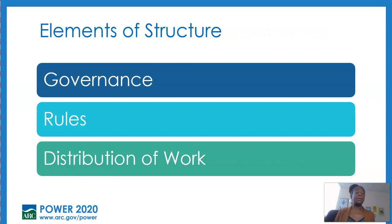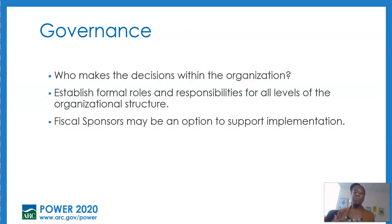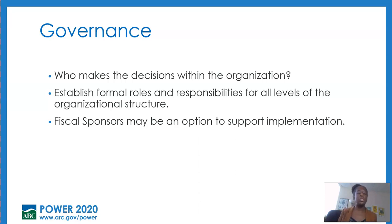So let's break down structure a little bit more. Structure actually has three key elements: governance, rules, and distribution of work. We'll talk a little bit about each of these. When you're trying to describe your organizational structure, you're going to want to talk about governance. What does governance really mean? Governance essentially means who is the boss, who's making the decisions in the organization. Since you're putting together a Power project, you'll probably have multiple stakeholders working in concert with one another to execute on the scope of work.